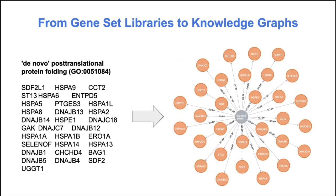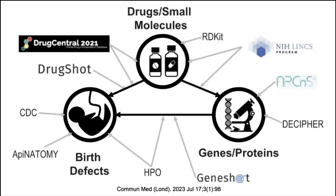To build this, we converted gene set libraries into knowledge graphs. For example, given a gene set like 'de novo post-translational protein folding' with its associated genes, the term is connected with each respective gene by an edge. Each of those genes is then also connected with other terms from other libraries. For example, DNAJC7 is not only connected with 'de novo post-translational protein folding' but also with different terms from different libraries. That is how we built this enriched knowledge graph.